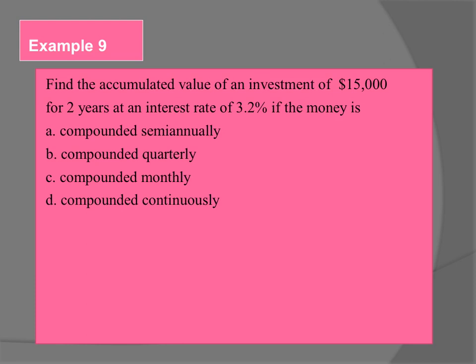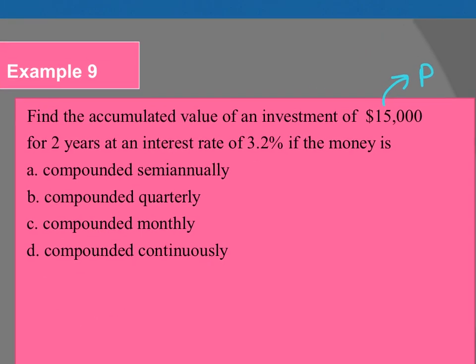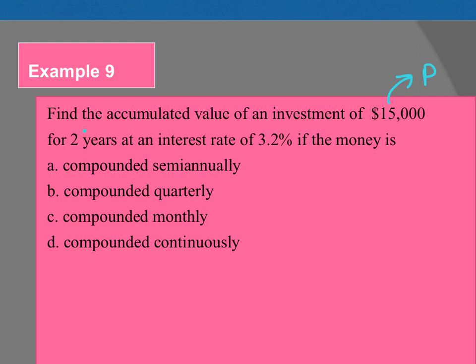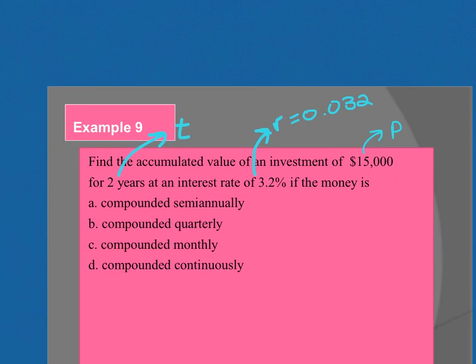So this one says, find the accumulated value of an investment of $15,000 for two years at an interest rate of 3.2% if the money is A, compounded semi-annually, B, quarterly, C, monthly, D, continuously. So break apart the information that I gave you at the beginning. $15,000 represents which variable? This is your P, this is your principal balance, that's how much money you put in at the beginning. Two years is which variable? T. Interest rate of 3.2% are, and what do I have to do with that? Two places left, so this is 0.032.